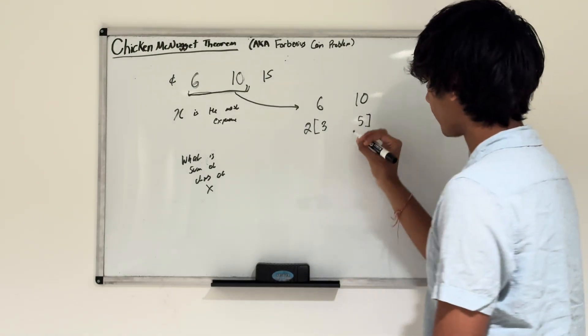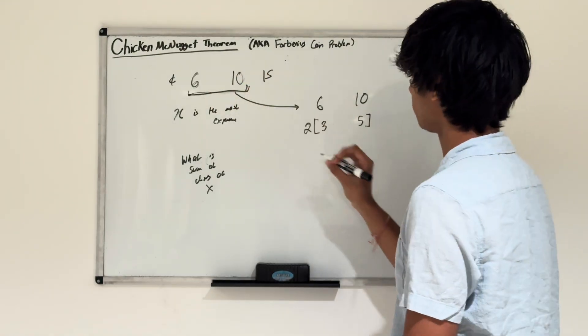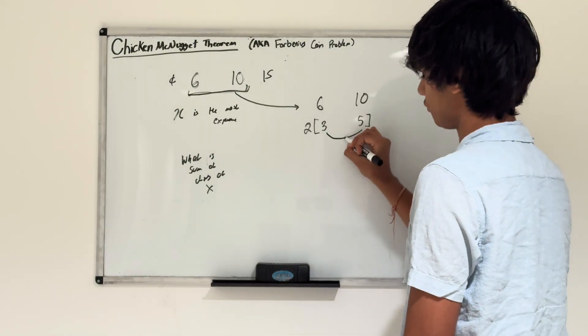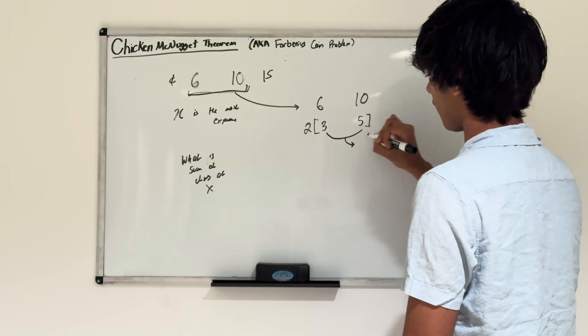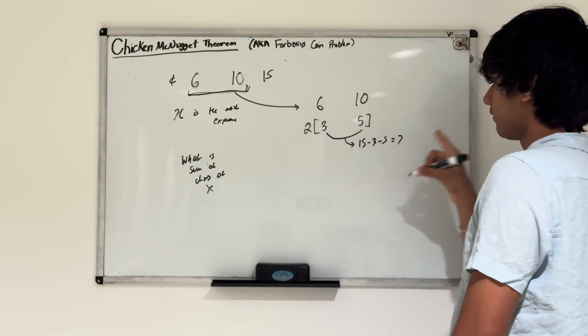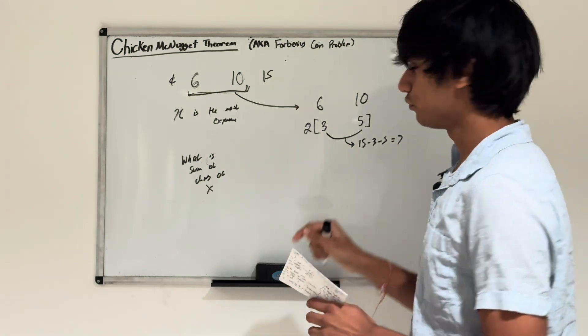Now I can apply the Chicken McNugget Theorem to find the largest number between 3 and 5 that can't be made. Using the theorem: 3 times 5 is 15, minus 3, minus 5, equals 7. So 7 is the largest number we can't make using 3 and 5.